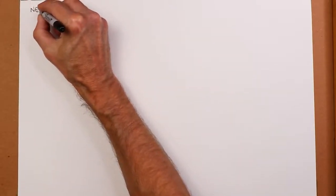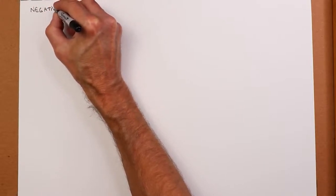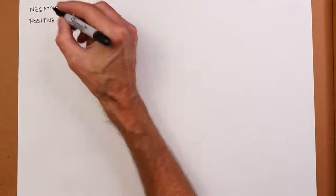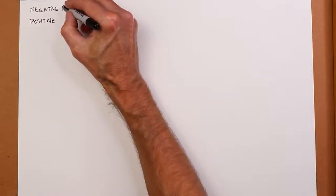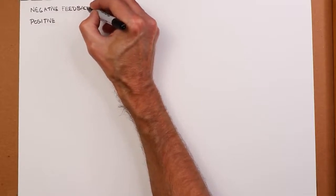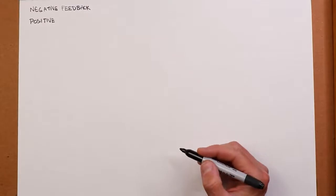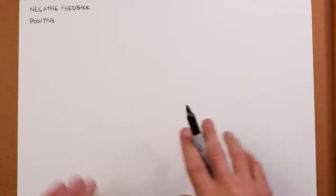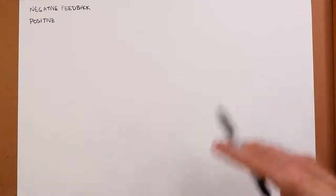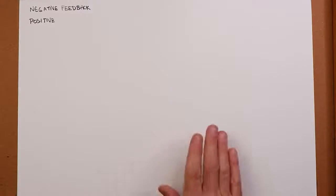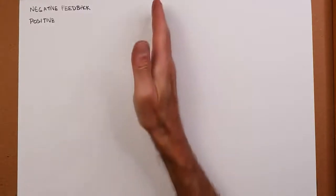There are two kinds of feedback: negative feedback and positive feedback. Both of these are useful in electrical circuits. Negative feedback involves stability, while positive feedback will basically turn into instability. For example, positive feedback is what we get when a public address system feeds back — you hear that squeal. Negative feedback is a process of stability, sort of maintaining a set value.